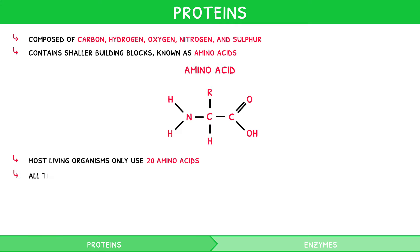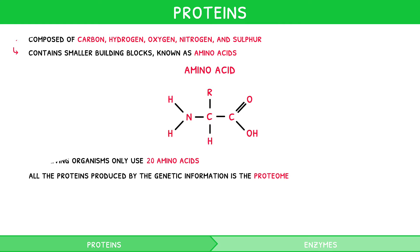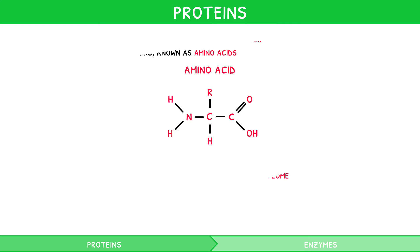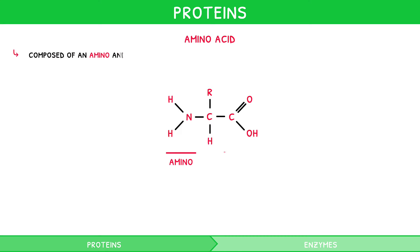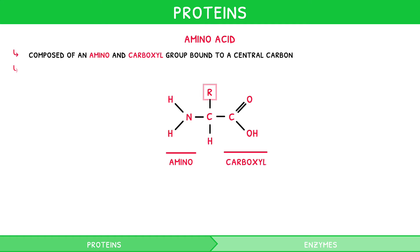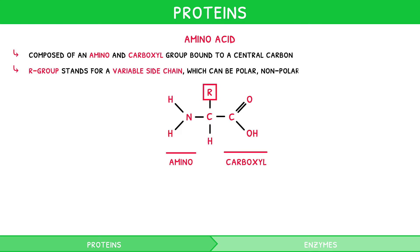The term given to all the proteins produced by the genetic information in an organism is the proteome. An amino acid is composed of an amino and carboxyl group bound to a central carbon. This central carbon then has a hydrogen and variable R group attached. This R group simply stands for a variable side chain, which can be polar, non-polar or charged.